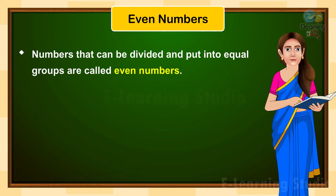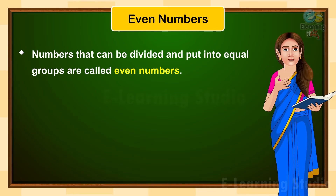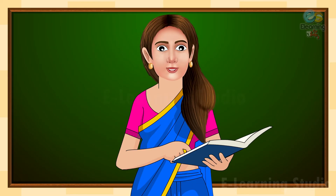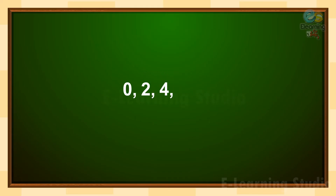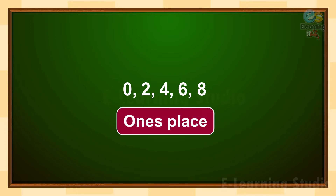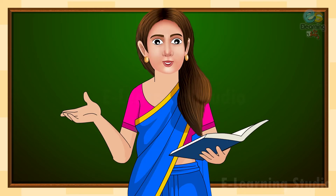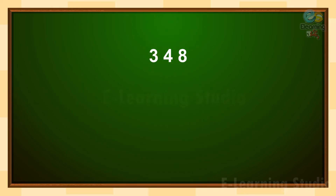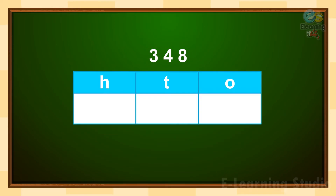Now children, can you tell me what are even numbers? Numbers that can be divided and put into equal groups are called even numbers. Children, even numbers have a 0, 2, 4, 6, or 8 in the ones place.